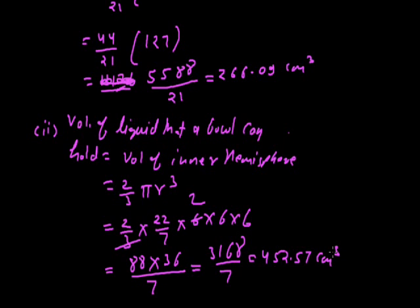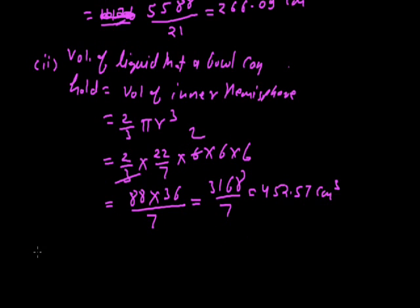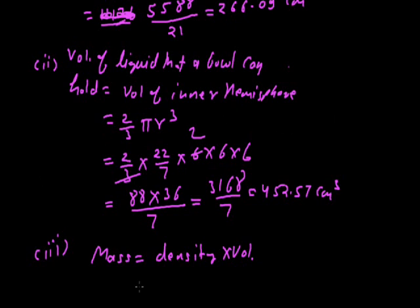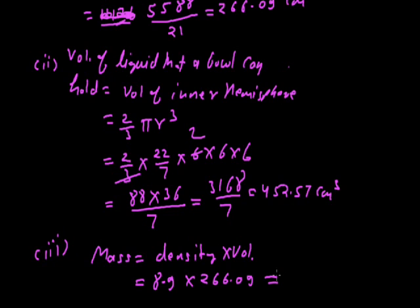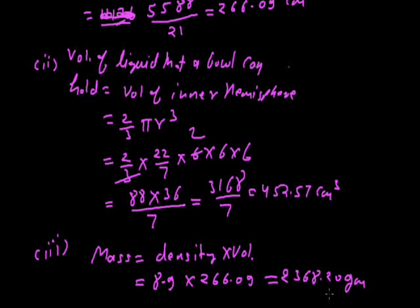Part 3 — Mass of the bowl: Mass = density × volume. Density = 8.9 g/cm³ and volume of steel = 266.09 cm³. So mass = 8.9 × 266.09 ≈ 2368.20 grams. The mass of the bowl is approximately 2368.20 grams.